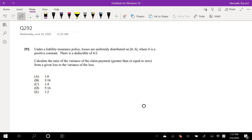Under our liability insurance policy, losses are uniformly distributed, so I'm going to call X losses. Losses are uniformly distributed on 0 to b, where b is a positive constant. I'm going to call Y my claim payment, and then there is a deductible of b over 2.